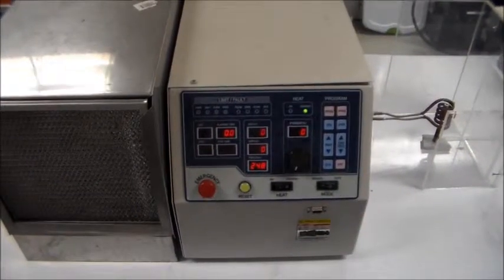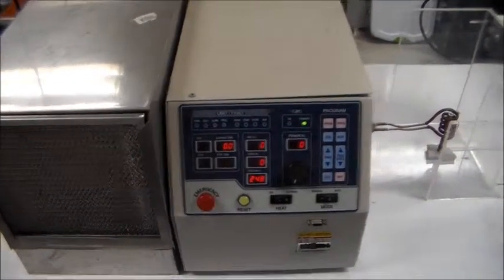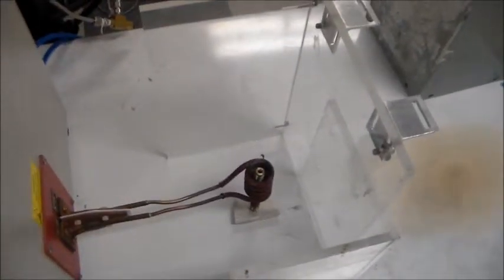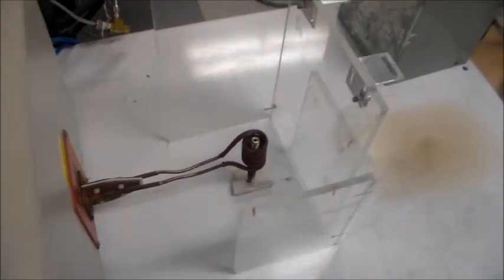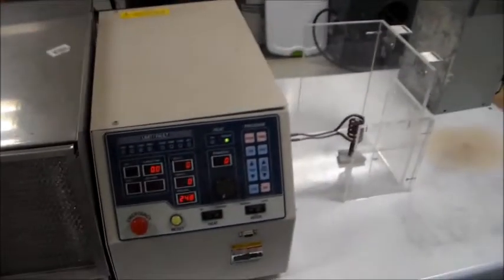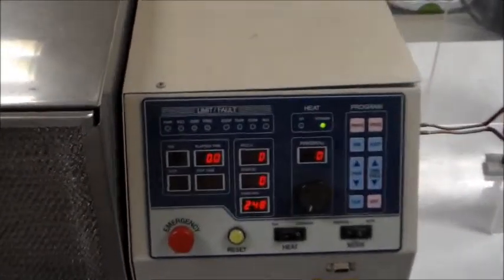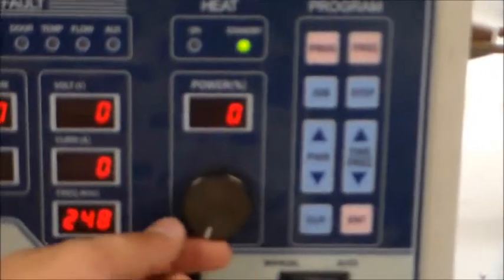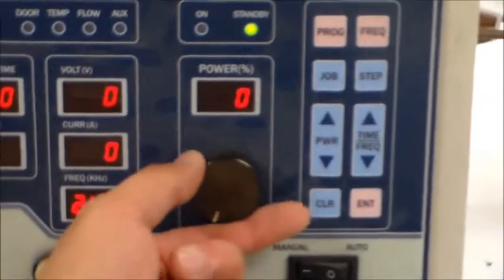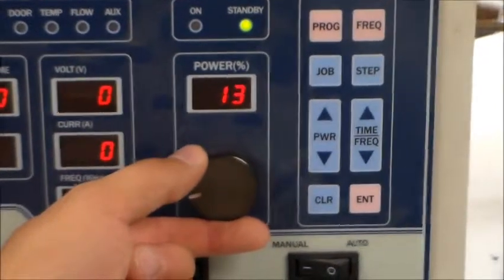Before setting the power in the heating unit, make sure that there is nothing around the heating coil that might be damaged. Once you make sure that there is nothing around the heating coil, proceed to set the desired power by turning the power knob to the desired power percent.